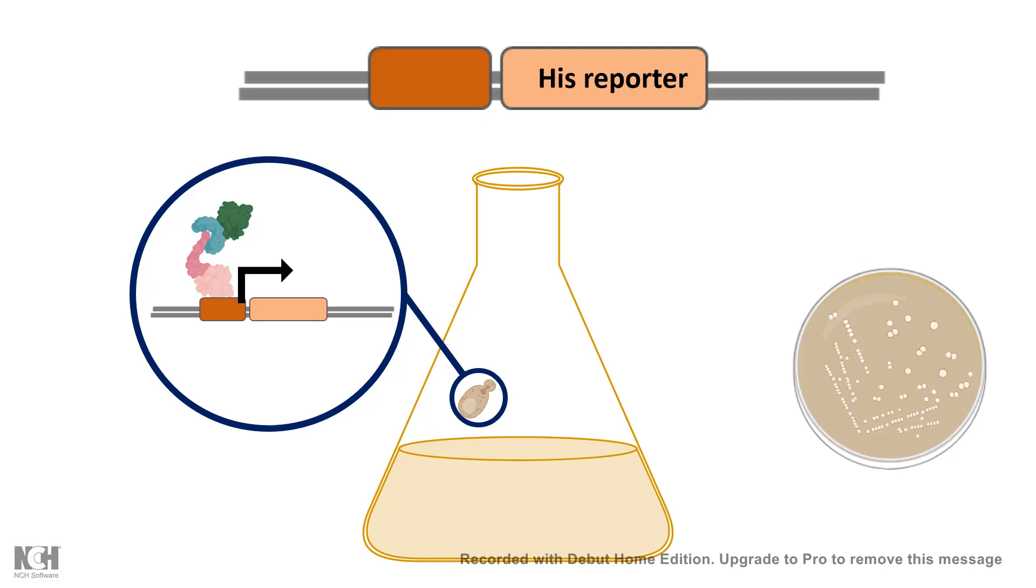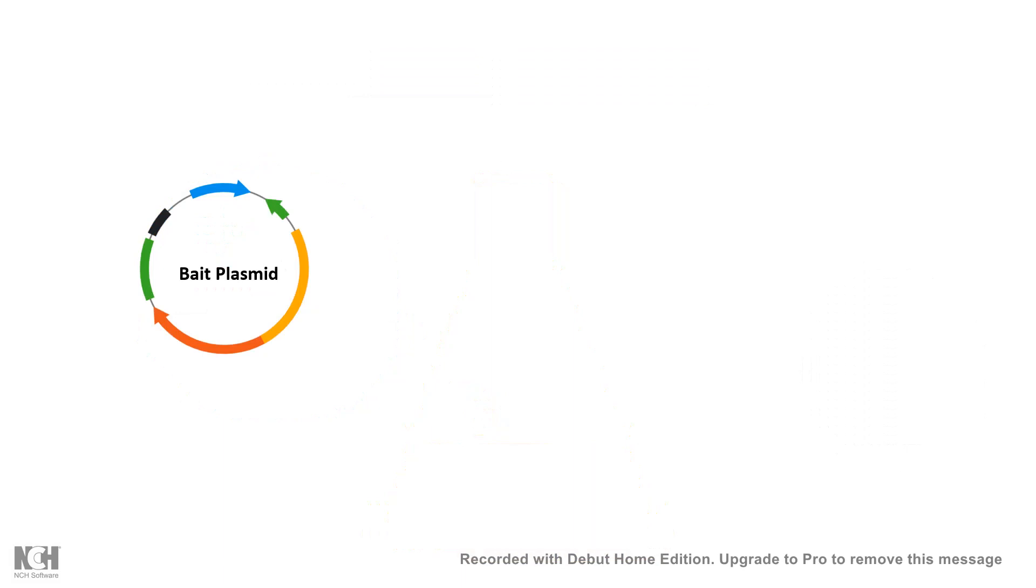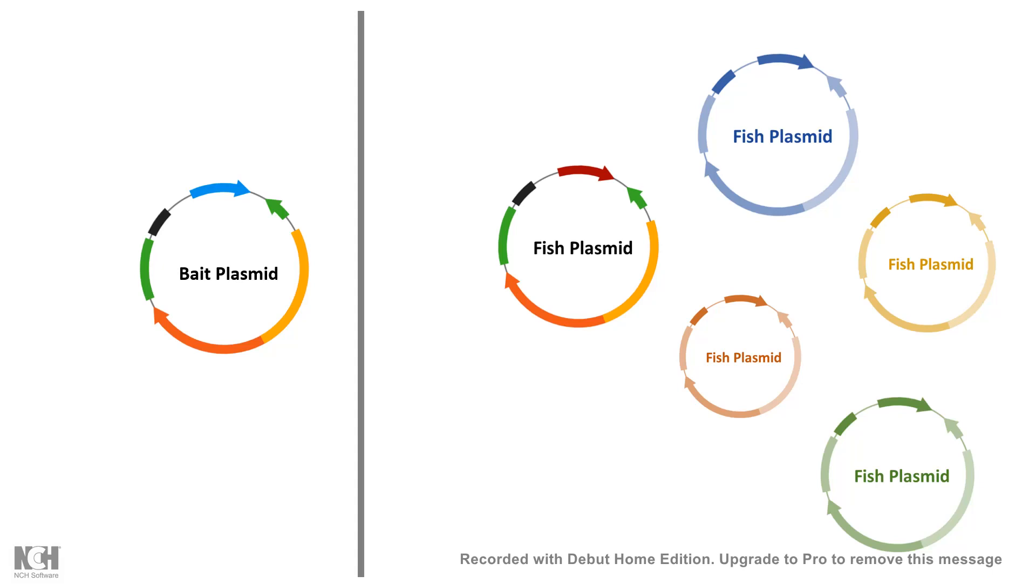Now the way we do this is we have a single bait plasmid, let's say the bait plasmid gives rise to the protein A and we want to understand whether protein A is interacting with a plethora of proteins so we would have multiple fish plasmid in which several cDNA for different proteins would be cloned and then the bait plasmid and the fish plasmid would be co-transfected into the yeast and the yeast would be grown.